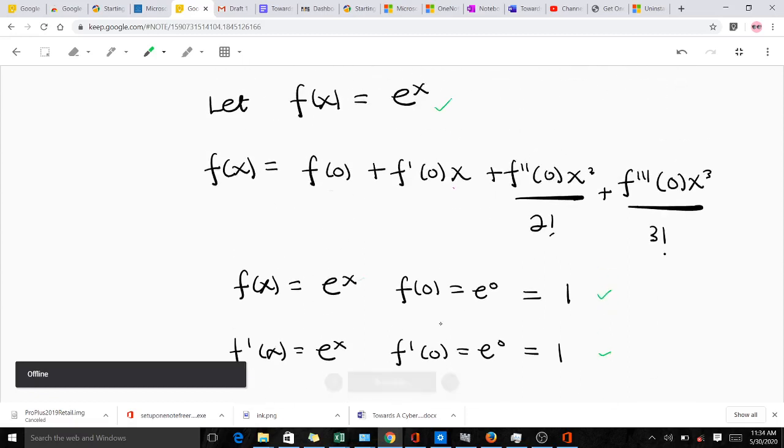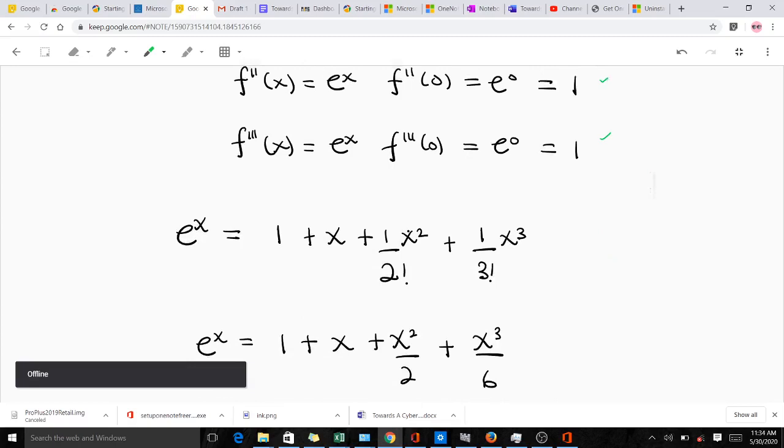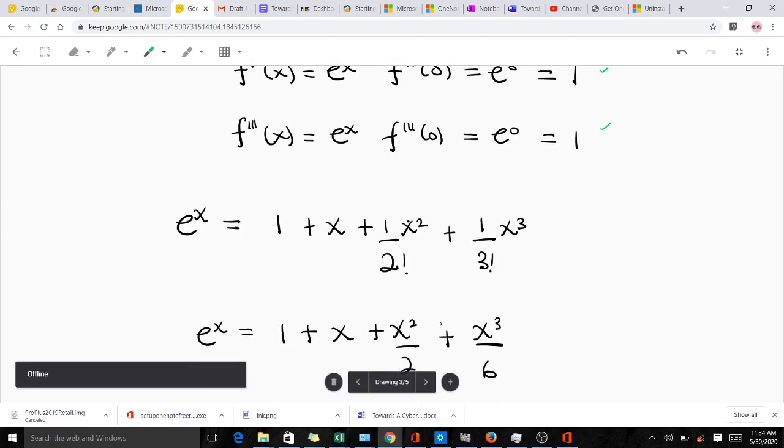So we have 1 here, the whole of this is also 1, this is also 1, and this is also 1. Making substitution into the main formula, we are going to get 1 plus 1 times x, which is x, then plus 1 over 2 factorial times x squared, then plus 1 over 3 factorial times x cubed.